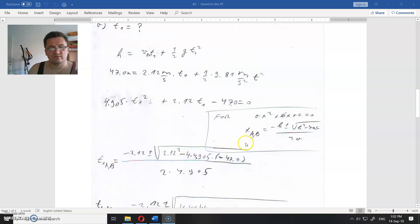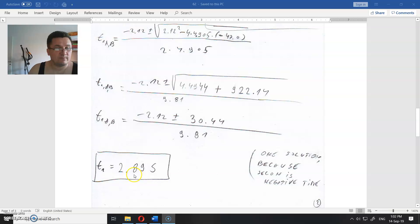Because it is a quadratic equation, we derive two solutions. One is 2.89 seconds, another solution is negative.